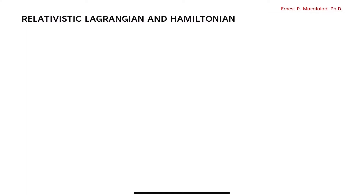What's up, guys? It's me, Sir Ernest, and today we're going to talk about the relativistic Lagrangian and Hamiltonian. From our previous discussion, we defined the Lagrangian L to be equal to the difference between the kinetic energy of the system T and the potential energy of the system U.